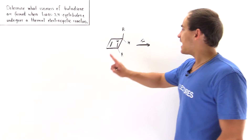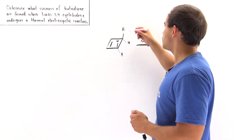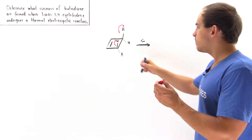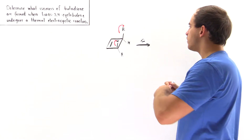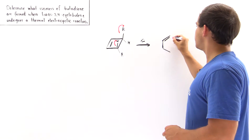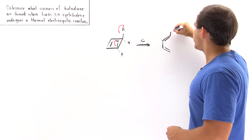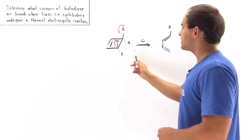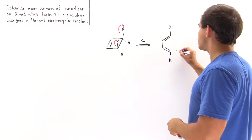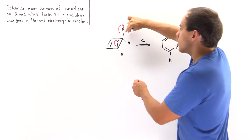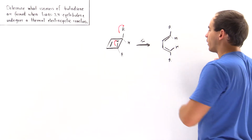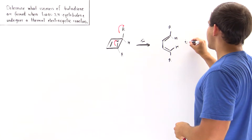Let's begin with the conrotation going into the board. Suppose both groups rotate this way into the board. When this happens, the sigma bond breaks, two pi bonds are formed, and we obtain the following molecule. The R group will point this way, and the H group goes into the board. When this bond breaks and rotates inward, the H points inward, and when the other bond rotates this way, the H also points inward.